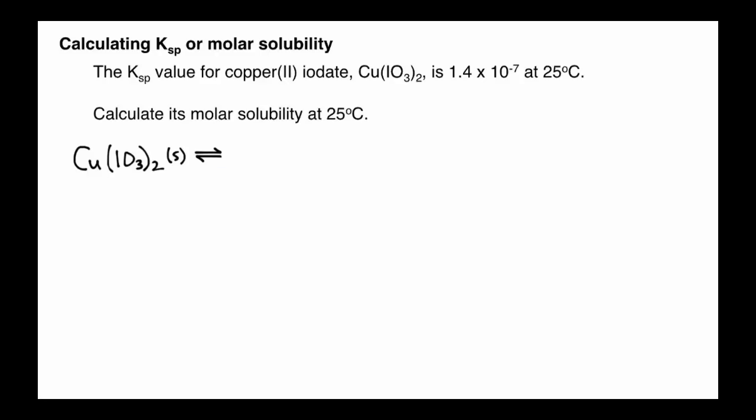That's going to be in equilibrium with its ions that are produced. If you notice in this equation, I have copper 2+, and I just have one of those, because this molecule of solid copper iodate just has one copper. But it's going to have two iodate ions, so it's important that we have a coefficient of 2 here.